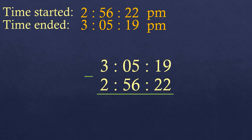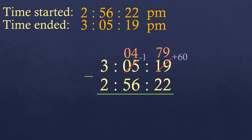We subtract from right to left, starting from the seconds: 19 minus 22 is not possible, so we borrow from the minutes — subtract one minute and add 60 seconds to the right. This 5 becomes 4, and this 19 becomes 19 plus 60, which is 79. Now we can subtract: 79 minus 22 is 57.